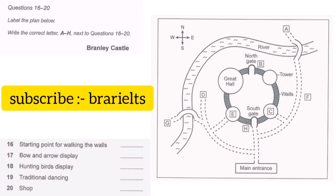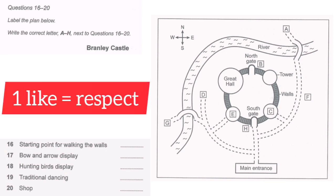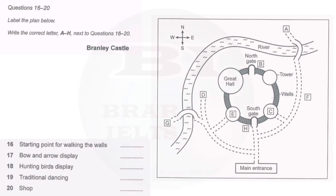And answer questions 16 to 20. Now, if you can take a look at your plans, you'll see Branley Castle has four towers joined together by a high wall with the river on two sides.